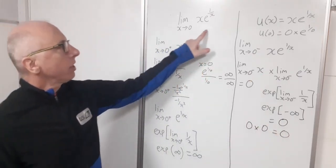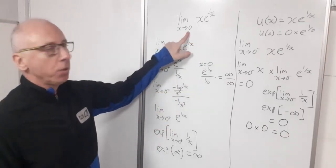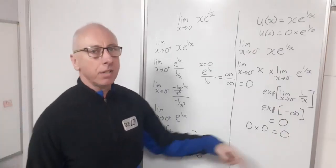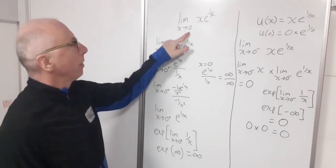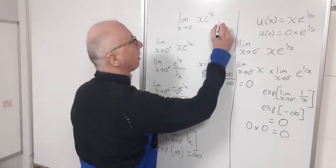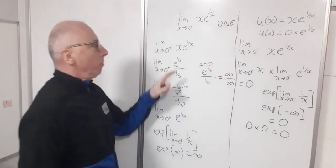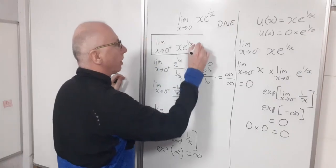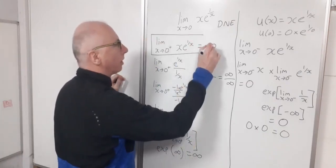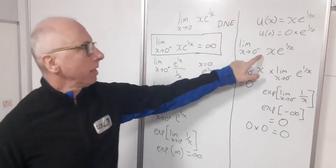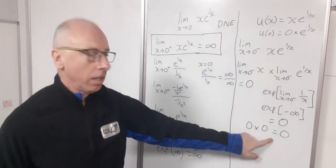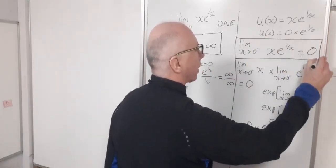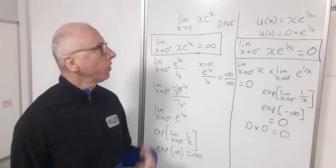So the limit as x approaches 0 from the positive side gives infinity, while the limit from the negative side gives 0. Since these two one-sided limits are different, the overall limit does not exist. The right-hand limit equals infinity and the left-hand limit equals 0.